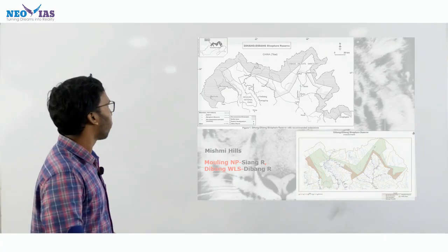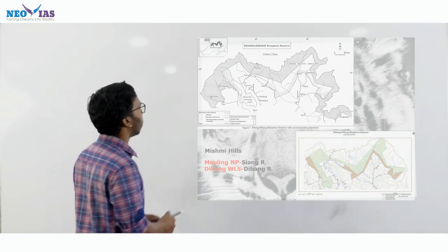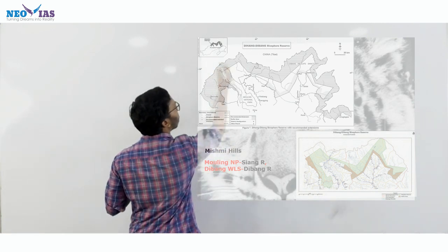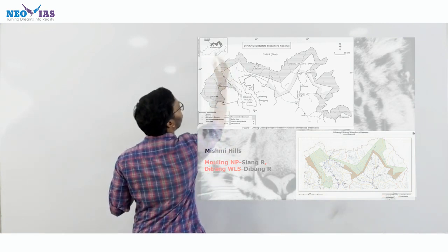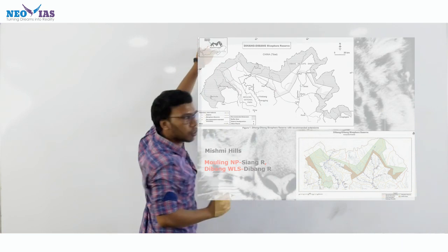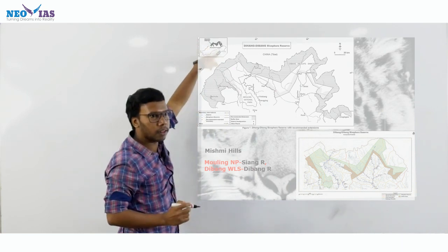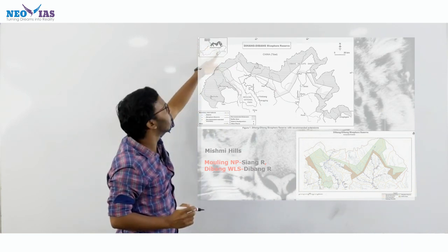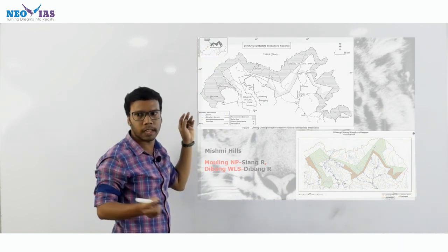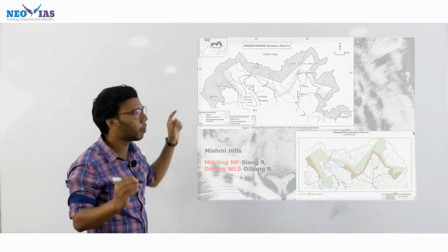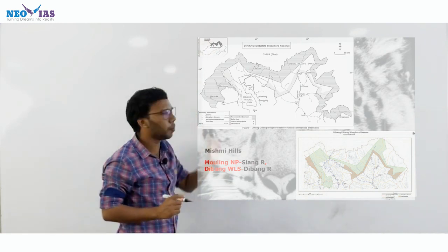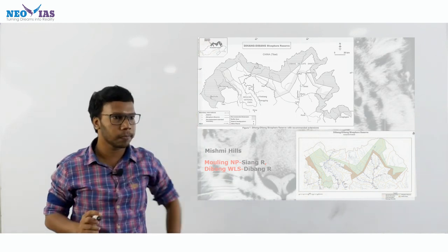This is the location of Dibang Biosphere Reserve. This is Arunachal Pradesh. On the north of Arunachal Pradesh, this black color is the Dibang Biosphere Reserve. On the north of Arunachal Pradesh, we are having Dibang Biosphere Reserve.